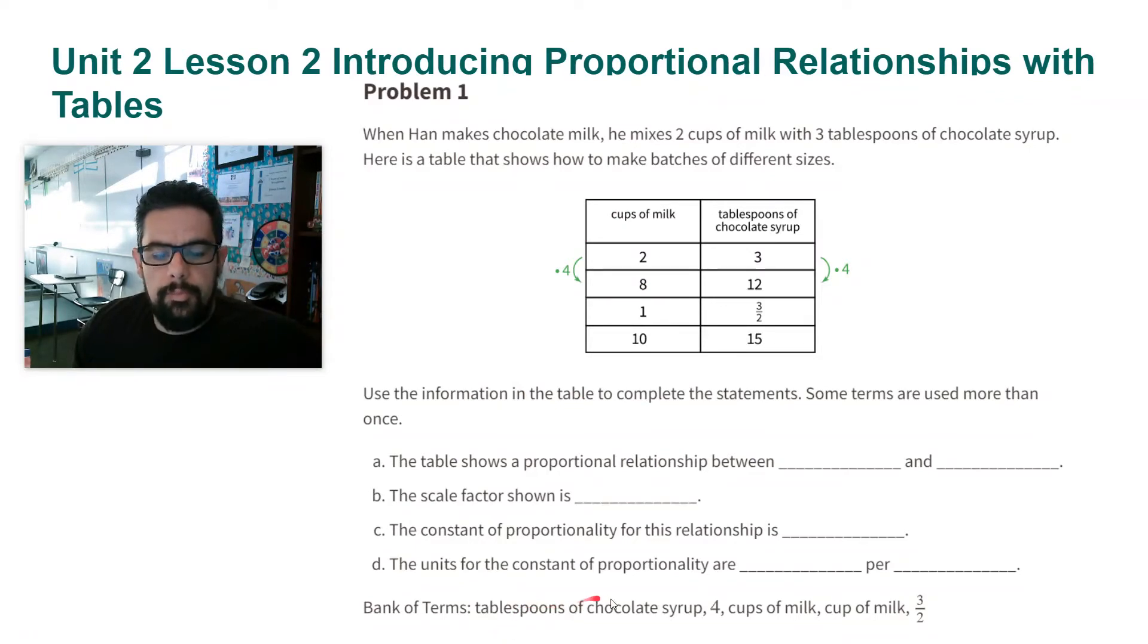Some terms are used more than once. And here are the terms that we're going to use. We're going to use tablespoons of chocolate syrup, the number four, cups of milk, cup of milk, and three halves.